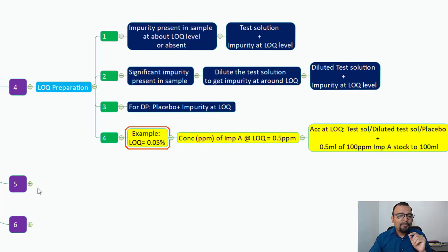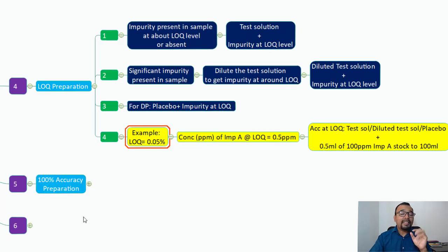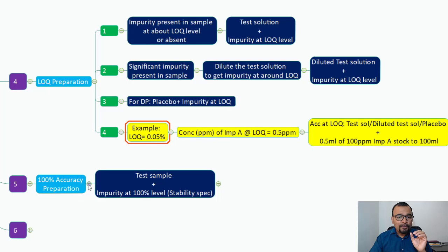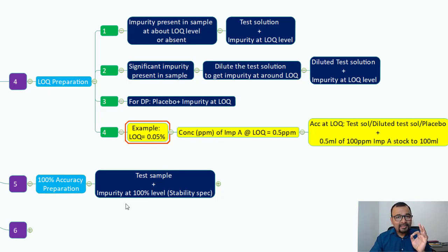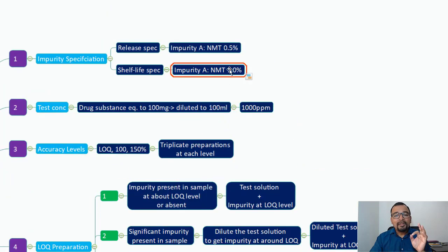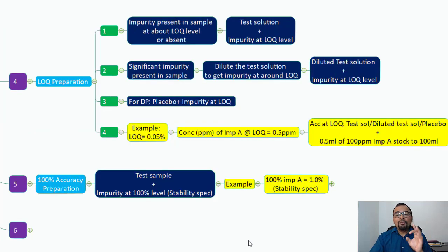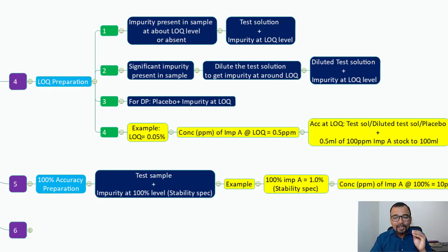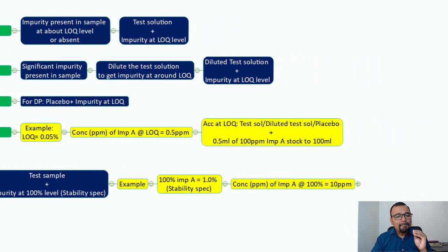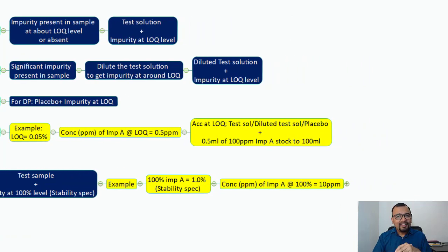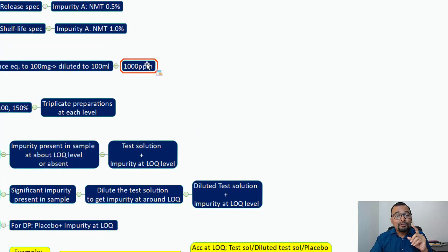Now let us understand the 100% accuracy level preparation. You take the test sample and spike impurity at the 100% level, considering the stability specification. The stability specification is 1.0%, so this becomes your 100% level. The concentration of impurity A at 100% with respect to 1000 ppm test concentration is 10 ppm.